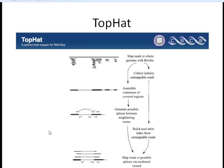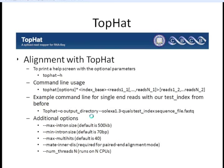So how does TopHat work? Being built on Bowtie, it first aligns all reads using Bowtie. There will be a subset of reads that can't align because they span an intron-exon boundary. TopHat then takes everything that couldn't map, splits those reads up, and tries to find where they can map on both sides of the splice junction. It uses that information to determine where splice junctions are and where these unmapped reads actually align.